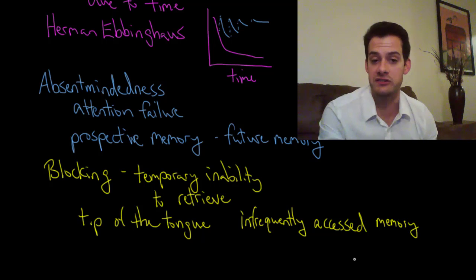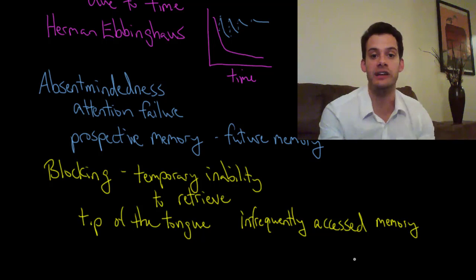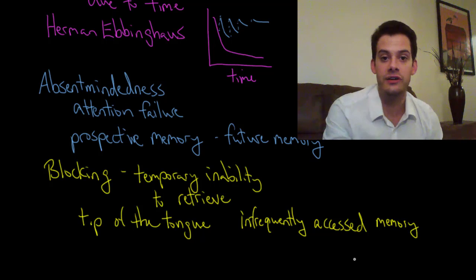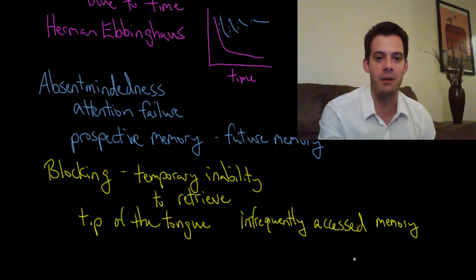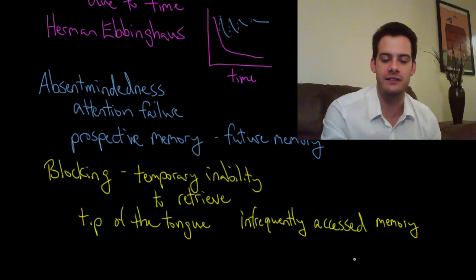Now it can also happen for other things, it's not just for words, this could happen when you see a former classmate that you haven't seen in ten years or longer and you recognize their face, you know that you know the person, you know that their name is somewhere in your memory but you can't seem to access it right at this moment and this can lead to an embarrassing social situation. But hopefully this doesn't happen too frequently to you.